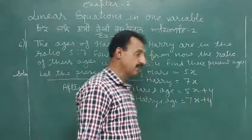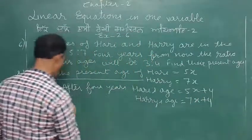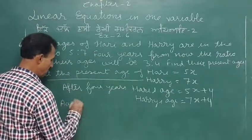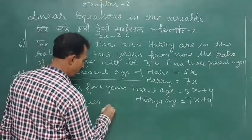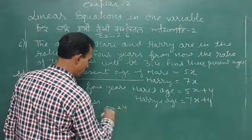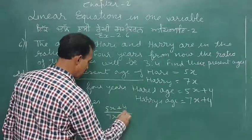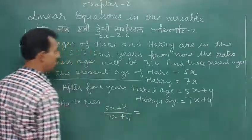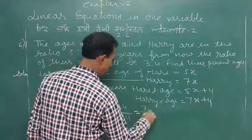So according to the question, five x plus four upon seven x plus four is equal to three upon four.